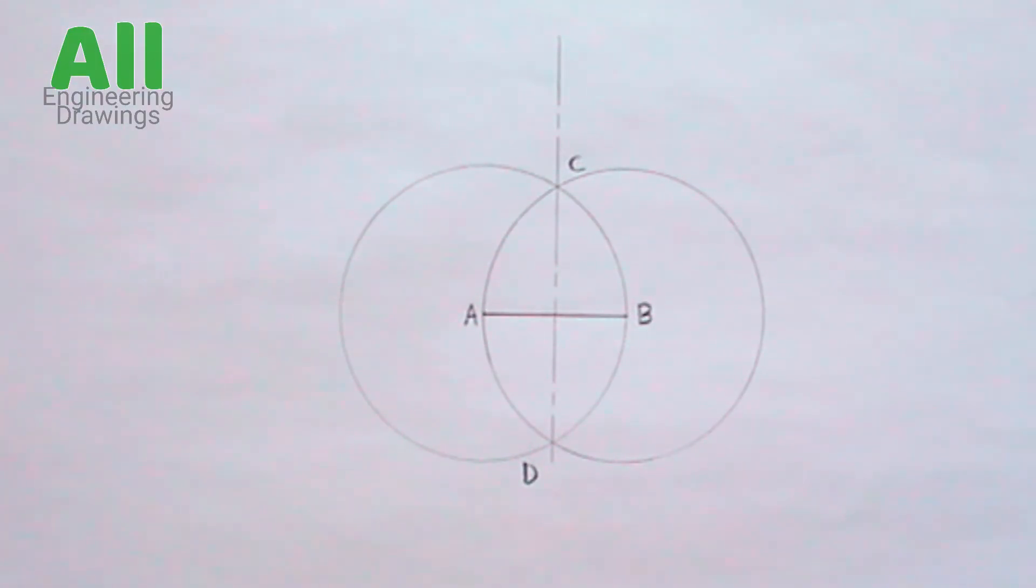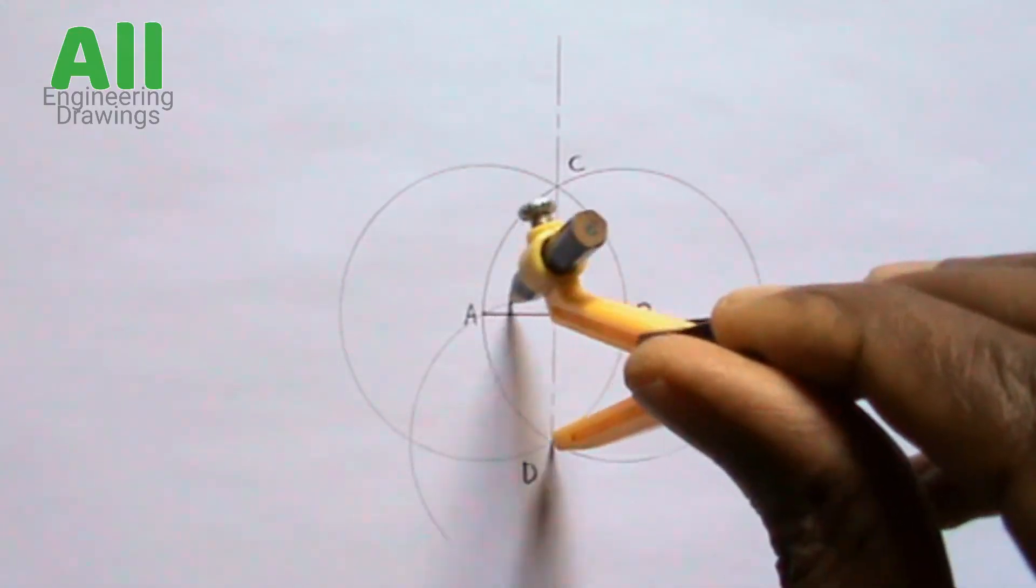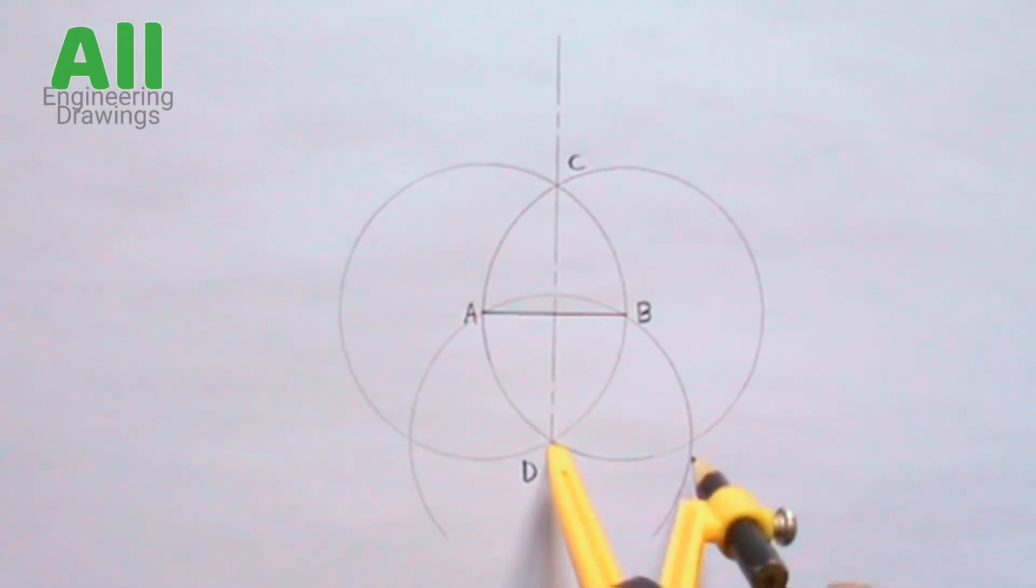Now place your compass on point D, then draw an arc this way. The arc should be drawn using the same radius you used to draw the previous circles.